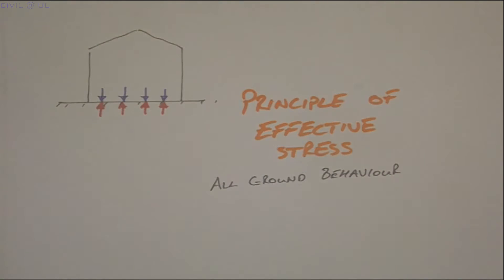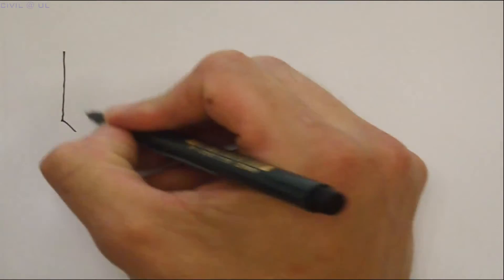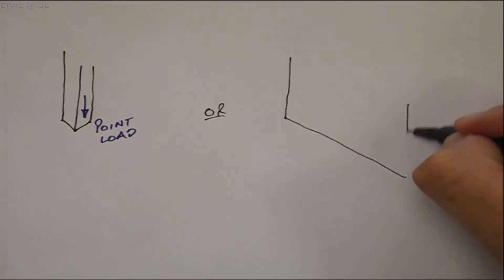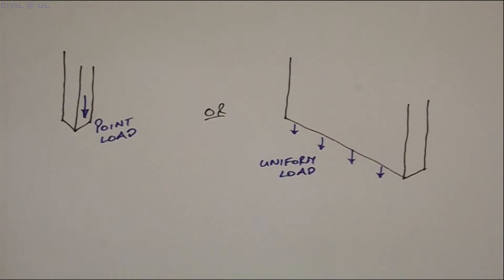So, let's start with something familiar. We know buildings transfer their weight to the soil, either through columns as point loads, or as uniform loading through walls.